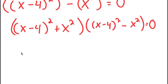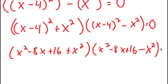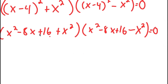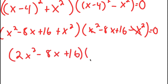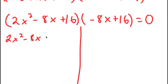Expanding x minus 4 squared gives x squared minus 8x plus 16. So I get x squared minus 8x plus 16 plus x squared times x squared minus 8x plus 16 minus x squared equals 0. These x squared terms cancel and add: x squared plus x squared is 2x squared. So I get 2x squared minus 8x plus 16 times negative 8x plus 16 equals 0. This splits into two equations: 2x squared minus 8x plus 16 equals 0, and negative 8x plus 16 equals 0.